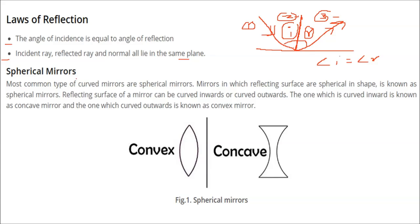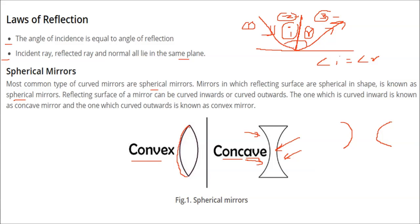Spherical mirrors. What are spherical mirrors? The most common type of curved mirrors are spherical mirrors — mirrors in which the reflecting surfaces are spherical in shape. The reflective surface of a mirror can be curved inwards or curved outwards. The one which is curved inward is known as a concave mirror, and both types are called spherical mirrors.